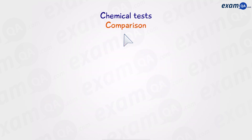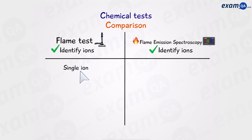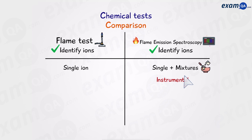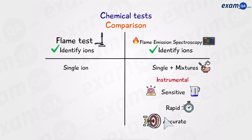To finish off, let's do a comparison between the flame test and flame emission spectroscopy. Both can identify ions. However, the flame test will only work if the sample contains a single ion. Flame emission spectroscopy will work for a single ion or even a mixture of different ions. Also, flame emission spectroscopy is an instrumental method, which means it's more sensitive — it will work even with smaller concentrations. It's rapid, so it takes less time to get results, and accurate, meaning it's not likely to make a mistake. Those were the different chemical tests to identify positive ions.